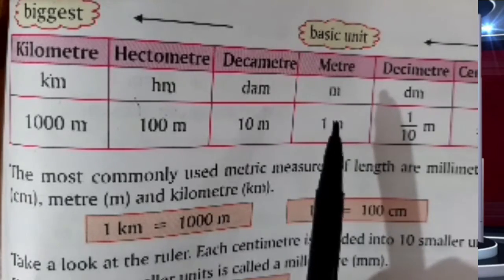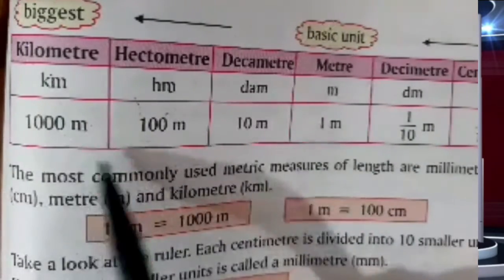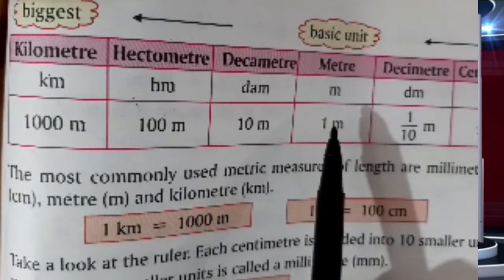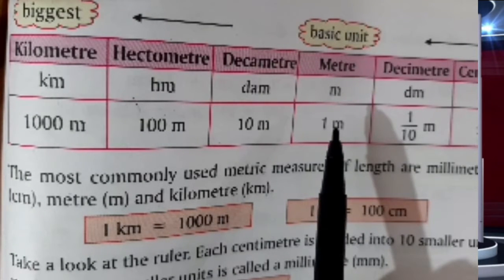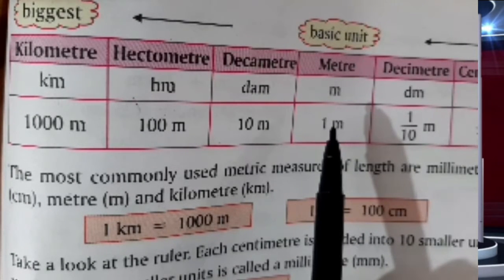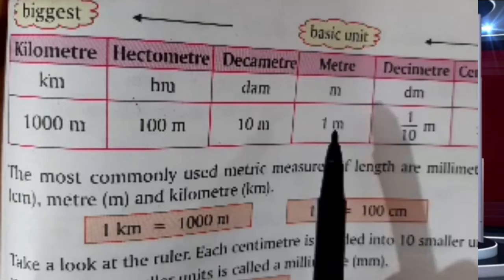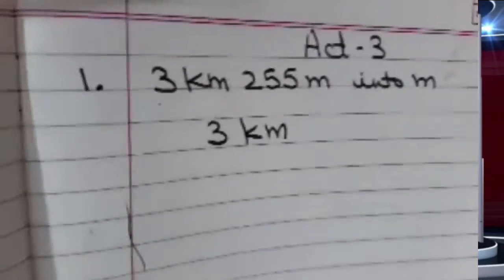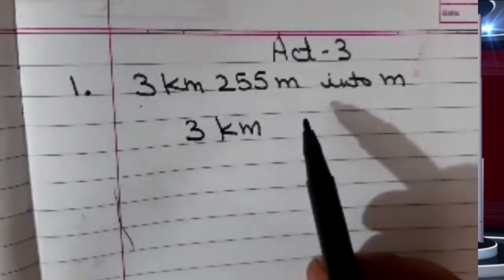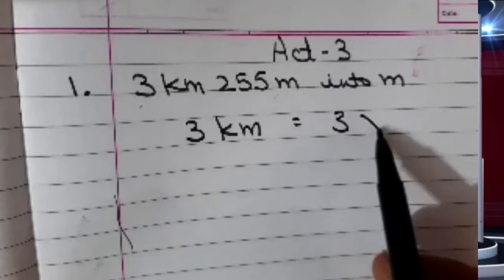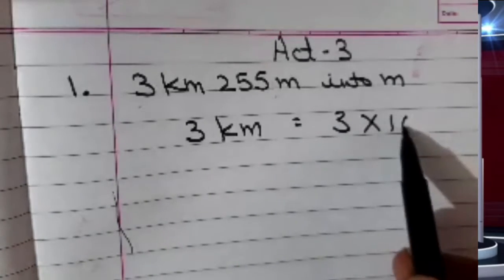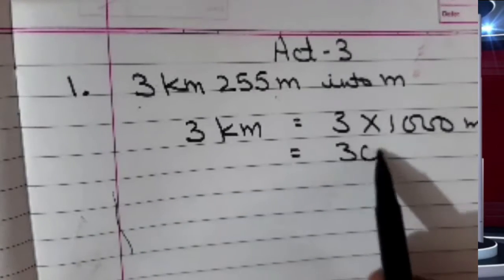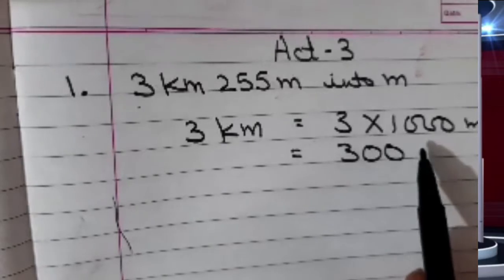From left to right, that is biggest to lower. To convert a bigger unit to a lower unit we use multiplication. With what number do I have to multiply? I count 1, 2, 3 — it means I have to multiply with 3 zeros, that is 1000. So I will multiply 3 kilometer with 1000 to make it meters. That is 3000 meters.